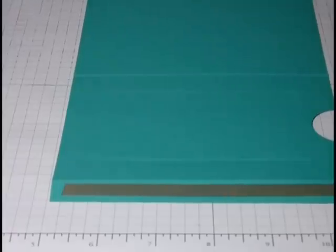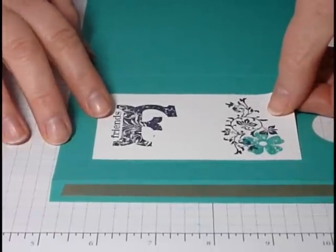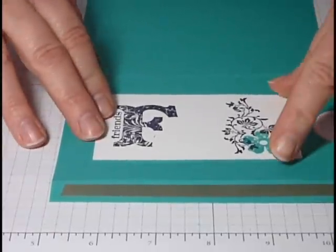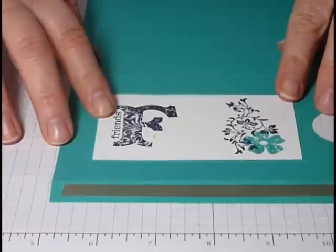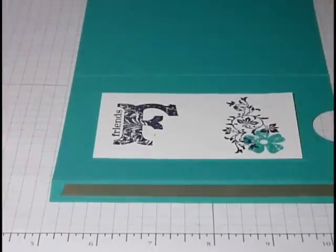It's time now to add the stamped images. So just take your piece of cardstock, and again, we're centering between our two cut lines and making sure that it's good to go on this piece of cardstock.